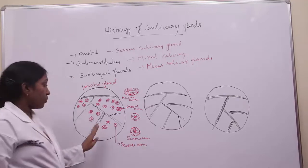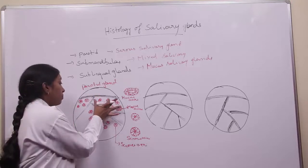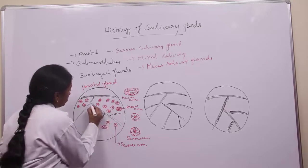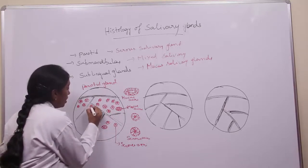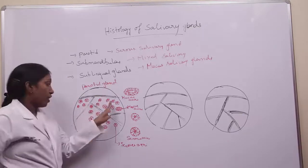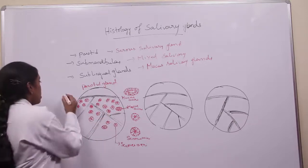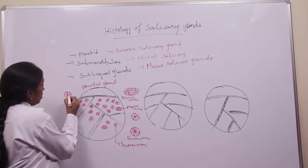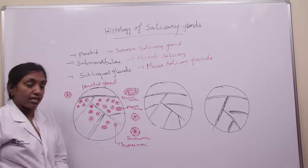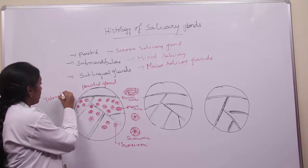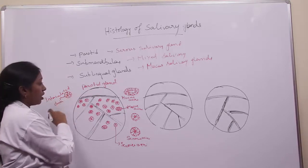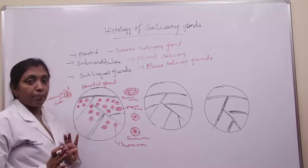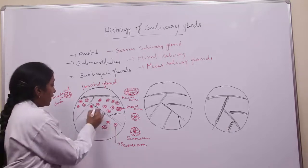Along with the serous acini, the parotid gland also consists of intercalated ducts. The secretions from these acini pour into the intercalated ducts. The intercalated ducts are lined by simple cuboidal epithelium.